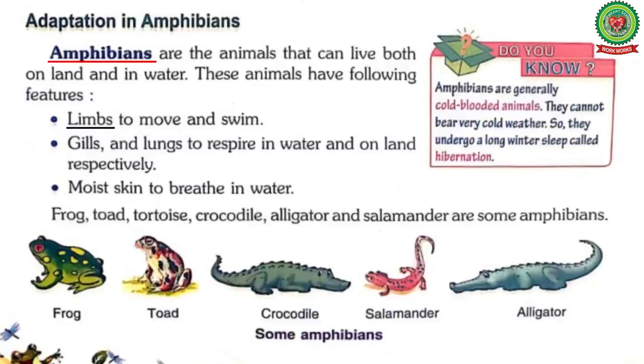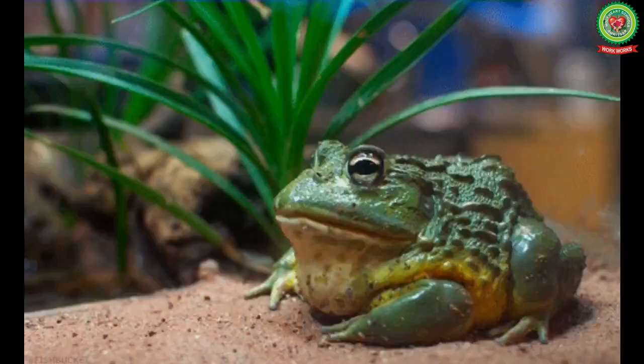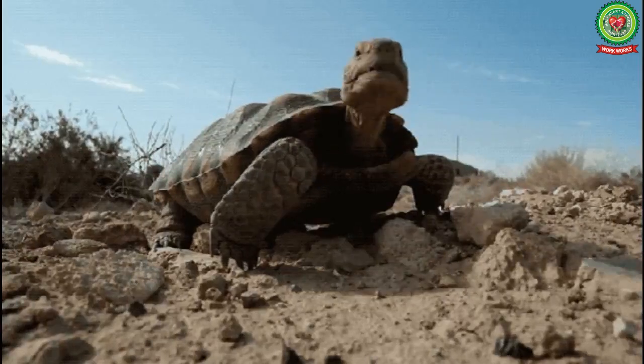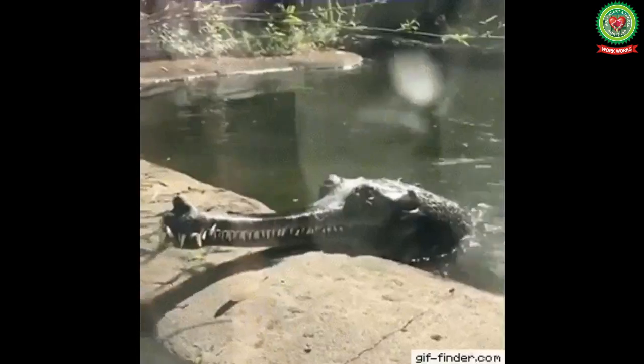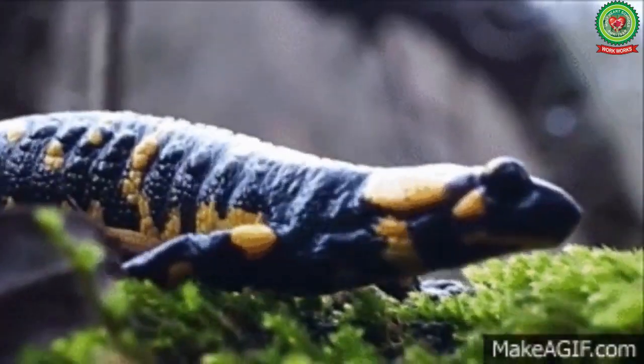The examples of amphibians are frog, toad, tortoise, crocodile, alligator, and salamander.